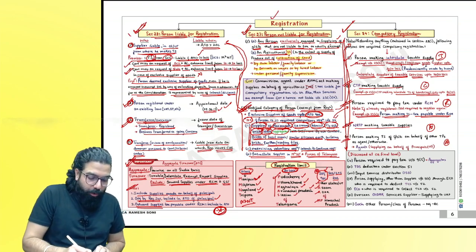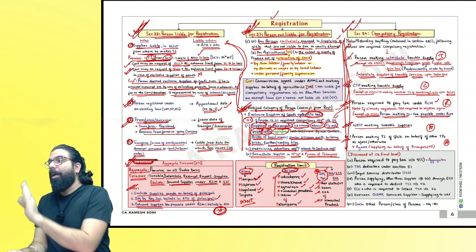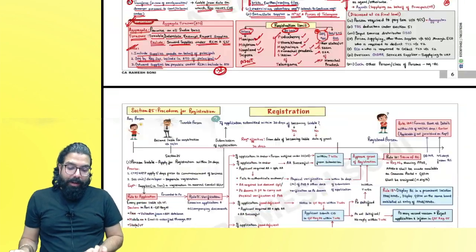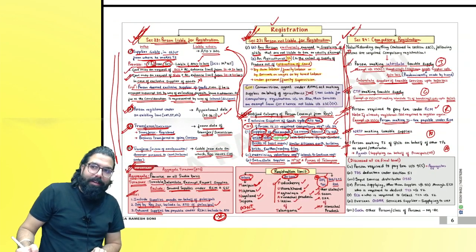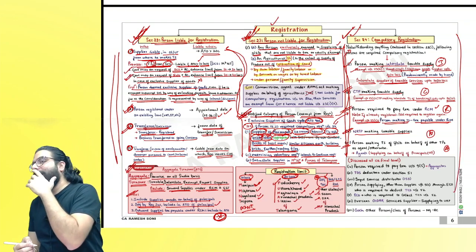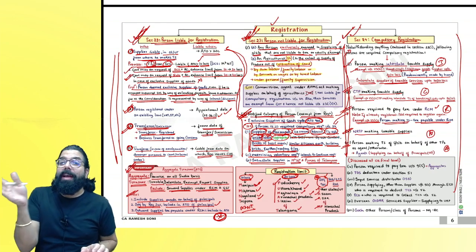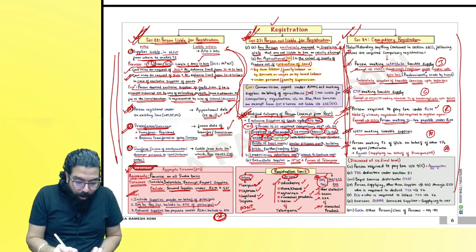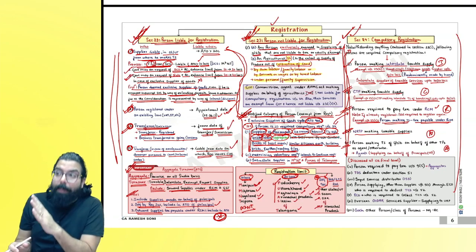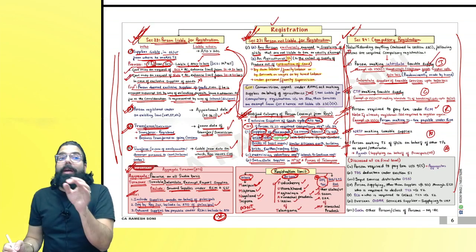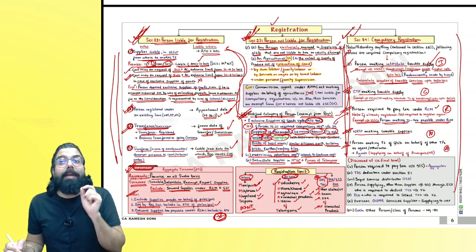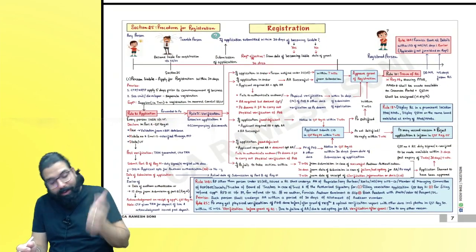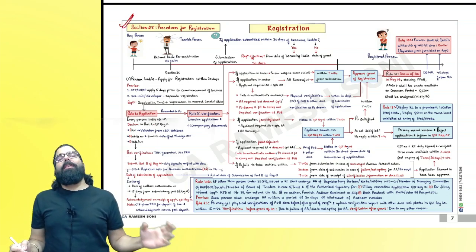To summarize: section 22 covers persons liable for registration; section 23 covers persons not liable; section 24 covers compulsory registration. Once you become liable under section 22 or 24 — whether on crossing aggregate turnover, on the appointment date, on the date of transfer, or on the date of certificate of incorporation — you must apply for registration within 30 days. This is specified under section 25.